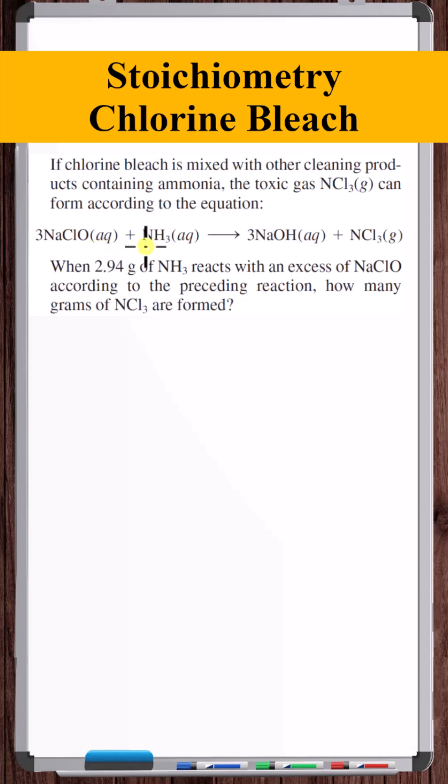For this chemical formula where chlorine bleach reacts with ammonia, if 2.94 grams of ammonia reacts with an excess of chlorine bleach, how many grams of NCl3 are formed?